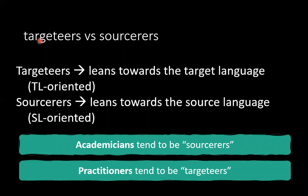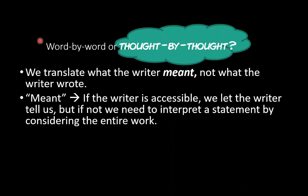When he translates, for example, Onegin's work into English, he gives a lot of footnotes to explain every single possible meaning from the text. Some readers will find it confusing, but those who really want to study Onegin will find it very useful because it is similar to knowing what Onegin has in mind.